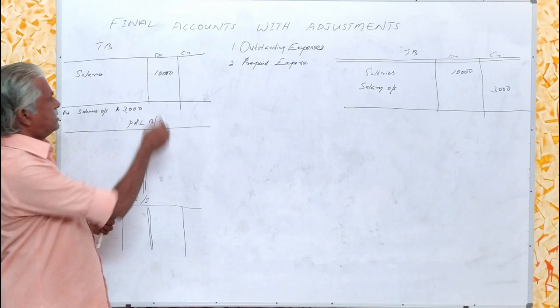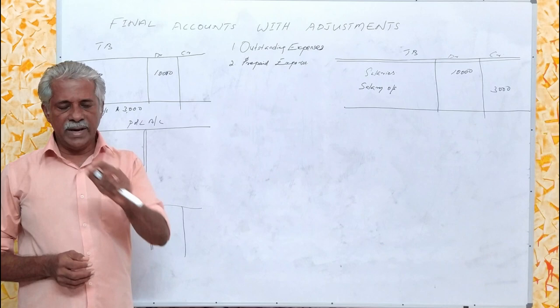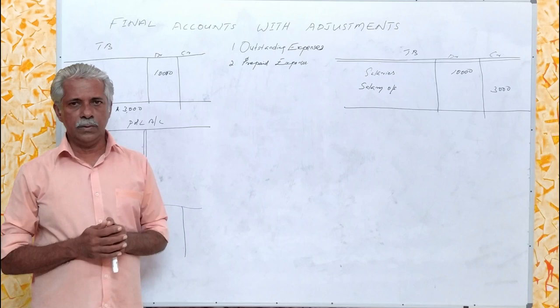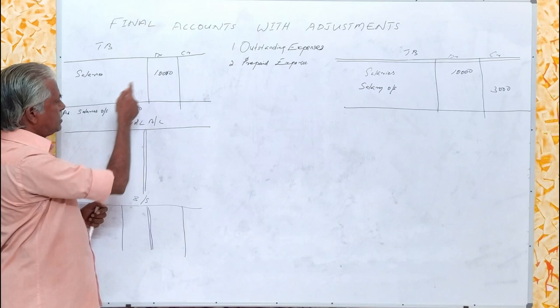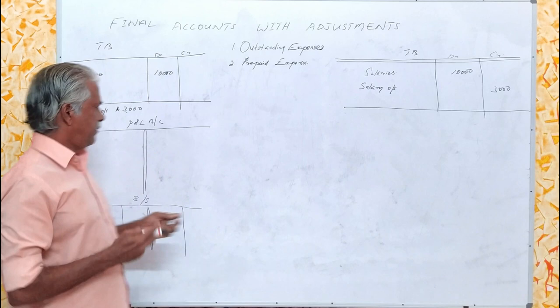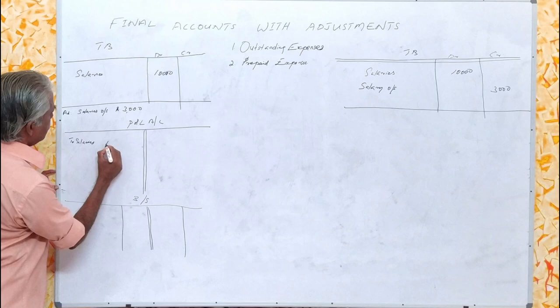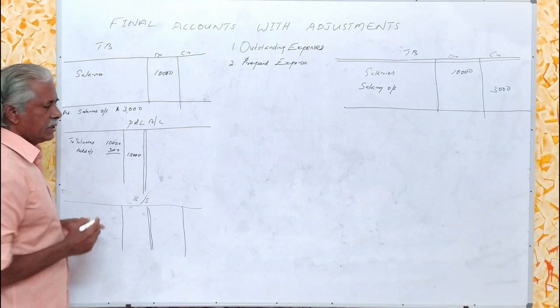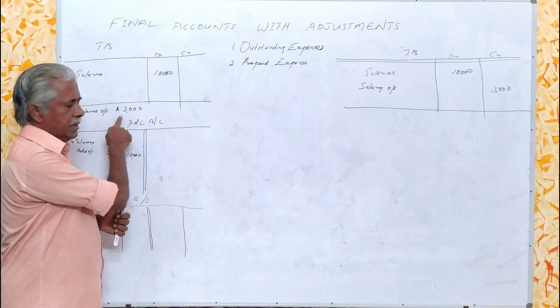So rupees 10,000 is the salary actually paid. But while drafting the profit and loss account, we have to take into consideration both paid and unpaid items. So in the profit and loss account we have to record 10,000 plus 3,000, that is 13,000. We write: salaries rupees 10,000, add outstanding rupees 3,000, total rupees 13,000. This is an item given in the adjustment.